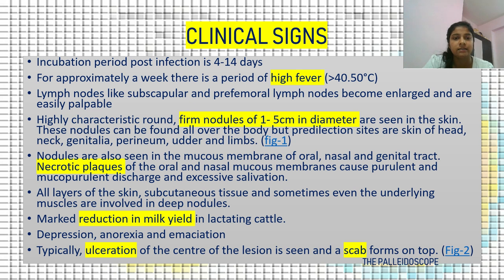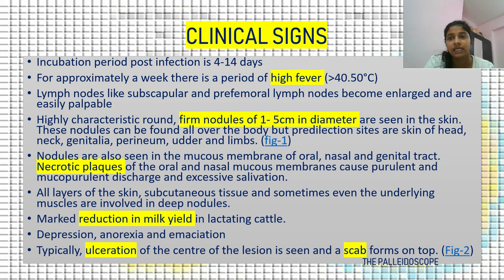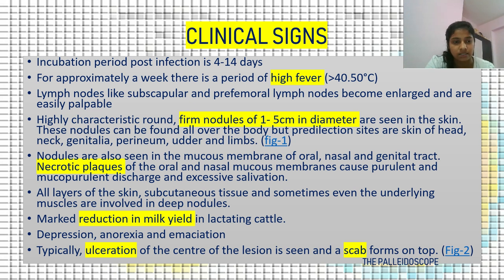Nodules are also seen in the mucous membranes of the oral, nasal and genital tracts. Necrotic flakes of the oral and nasal mucous membrane cause purulent and mucopurulent discharge and excessive salivation. All layers of the skin, subcutaneous tissue and sometimes even the underlying muscles are involved. There is a marked reduction in milk yield in lactating animals. Depression, anorexia and emaciation are common signs. Typically, ulceration of the centre of the lesion is seen as a scab forms on top.